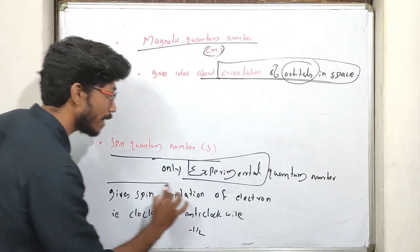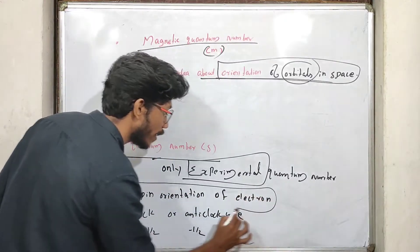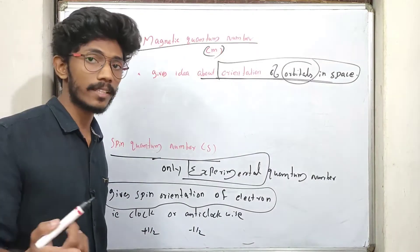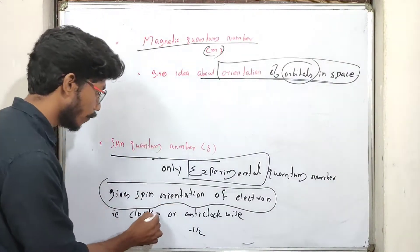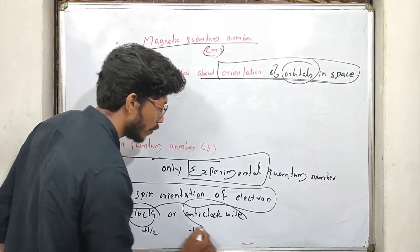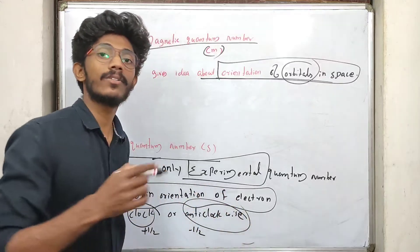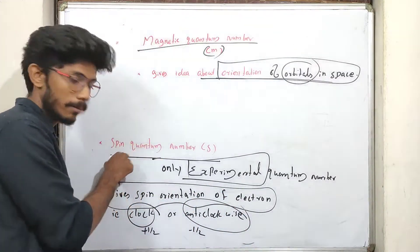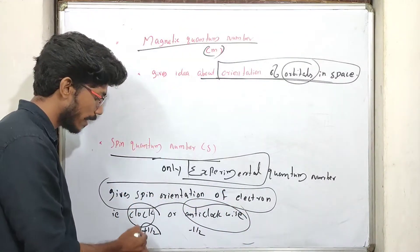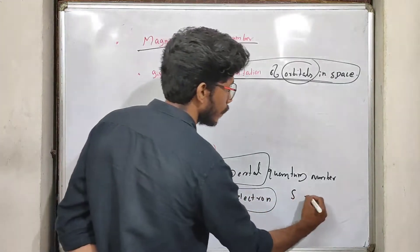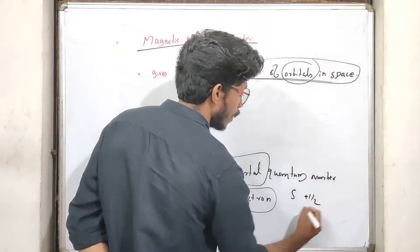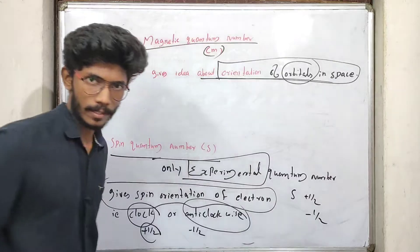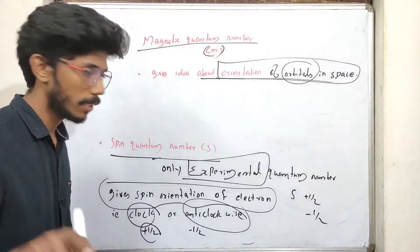The Spin Quantum Number gives the spin orientation of electrons. How does an electron orient itself? Clockwise or anticlockwise. If the electron spins clockwise, the spin quantum number value is plus half. If it spins anticlockwise, the spin quantum number value is minus half. This is the spin quantum number.